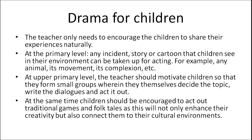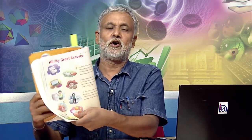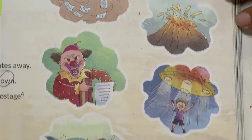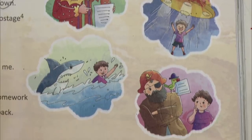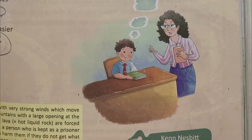The teacher only needs to encourage children to share their experiences naturally. At the primary level, any incident, story, or cartoon that children see in their environment can be taken up for acting — any animal, its movement, its complexion, anything they see. For example, in classroom situations itself, children have so many pictures — like 'all my great excuses.' Children can think about how a computer interacts with them and can always imitate animals in their surroundings.